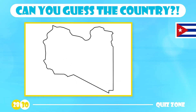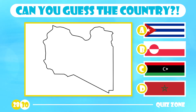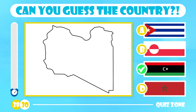Can you name this country? Is it Cuba, Greenland, Libya or Morocco? The answer is Libya. Libya is located in Northern Africa and is the fourth largest nation in Africa and the 16th largest country globally.